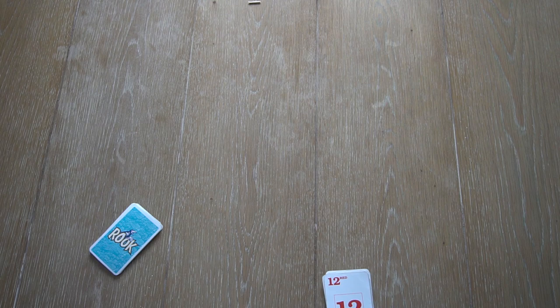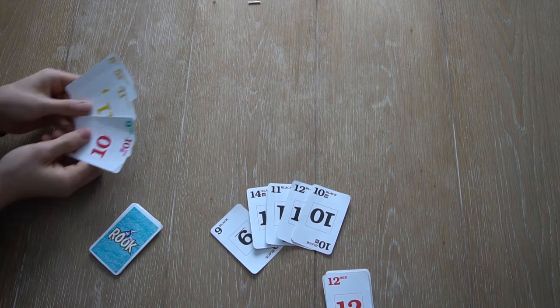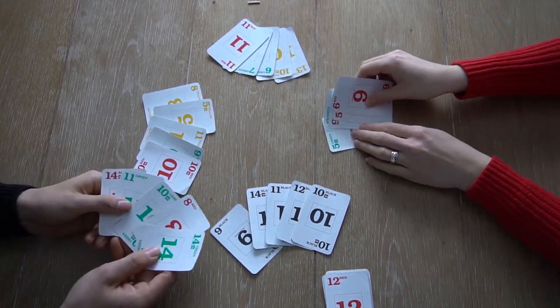Also, if you know that no one else has the trump color and your whole hand consists of only trump cards, you can end the round at once and collect the remaining points and nest.